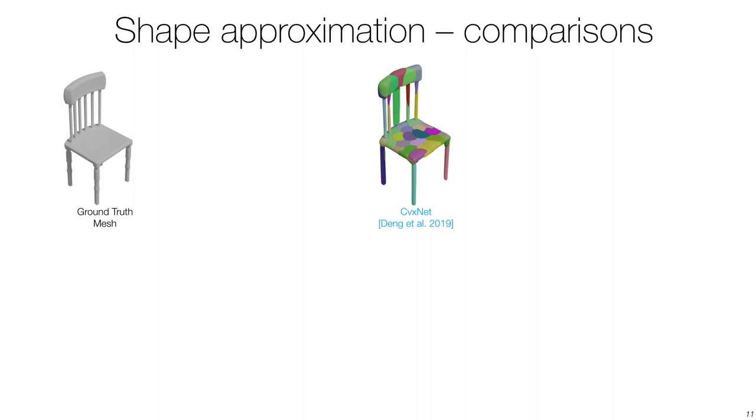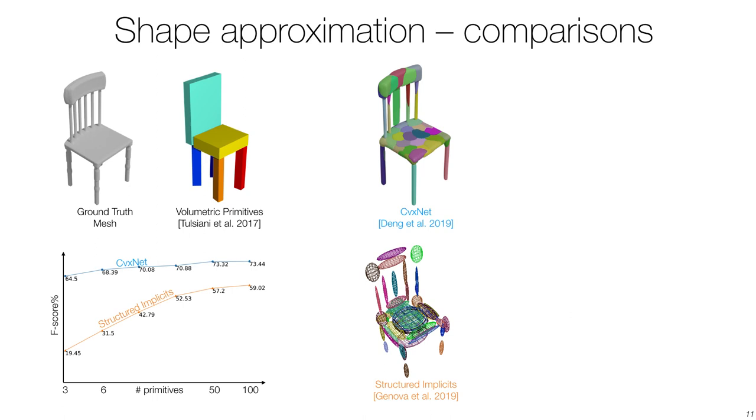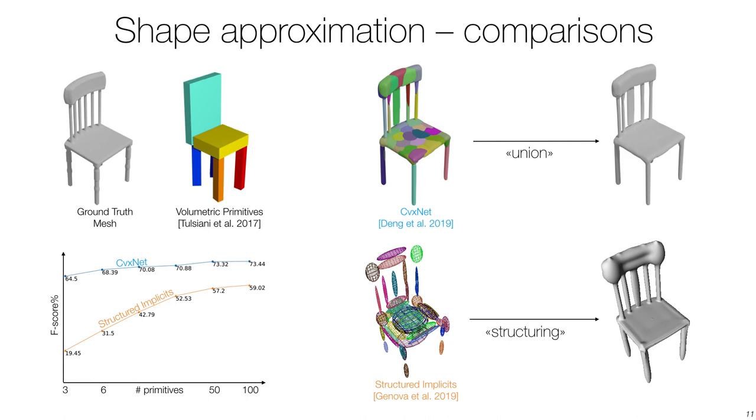Here, we compare our method to those that perform shape decomposition as a collection of boxes or a collection of blended Gaussians. Note how our reconstruction quality for a given number of primitives is always better, while also keeping a closer connection between the surface of the parts and the surface of the full object.